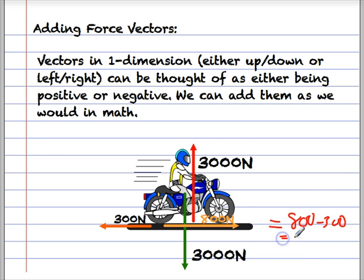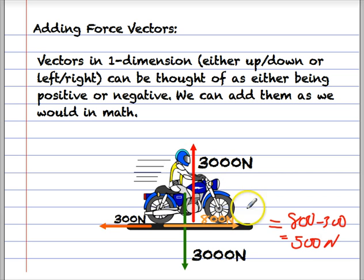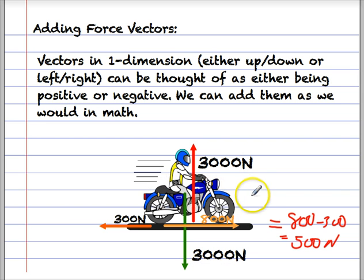That gives us 500, so the resultant force on the motorbike is 500 newtons to the right. That suggests the motorbike is actually accelerating in this direction — it's getting faster.